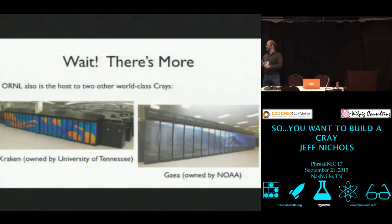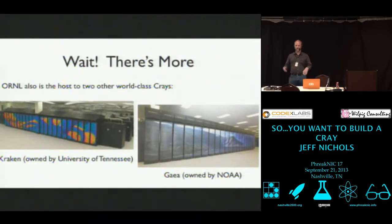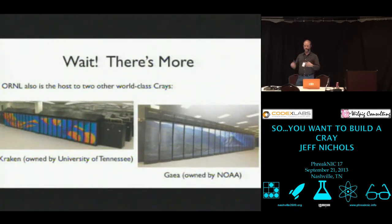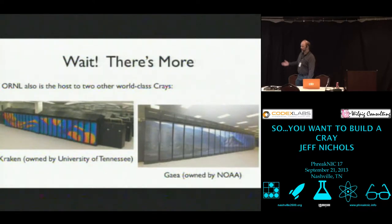There's more. ORNL is also host to two other machines. Kraken is owned by the University of Tennessee, and Gaia is owned by NOAA. Both of these are in the top 50 machines in the world. Kraken topped out at number three, but that was a few years ago. We'll go into what number one, two, and three means.